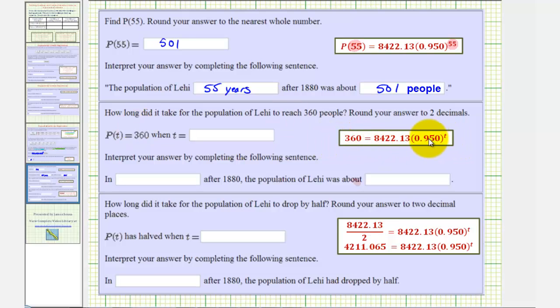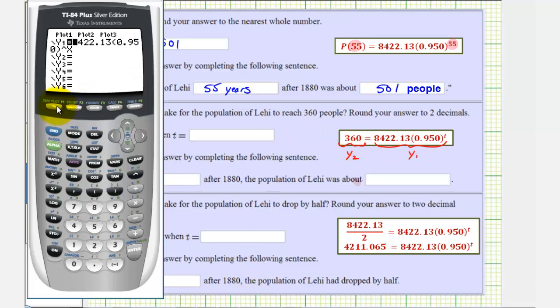Because we're going to solve this graphically, we already have the right side in y1, we can enter 360 in y2, and then determine the value of t by determining the point of intersection of the two graphs. So now we'll go back to the calculator, press y equals, press enter, and then 360 in y2.